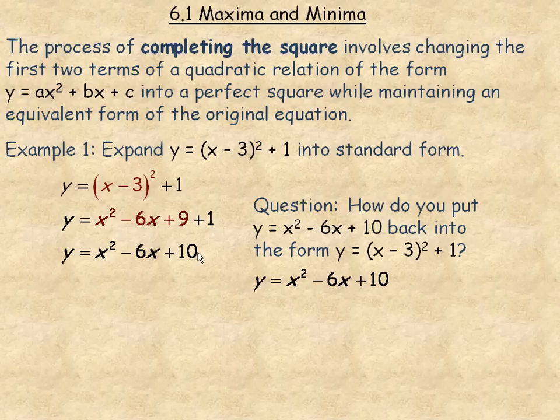Now the problem that we are going to deal with in this note is how we take this kind of a quadratic relation and put it back in that form so that we can see that the vertex is at point 3 comma 1. That is the question we are going to deal with here in this example.